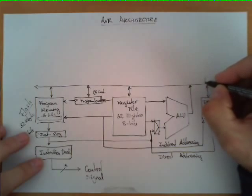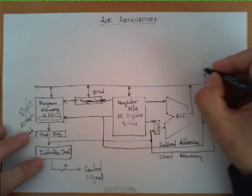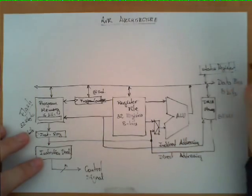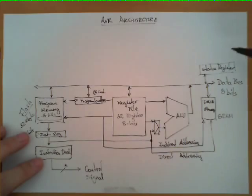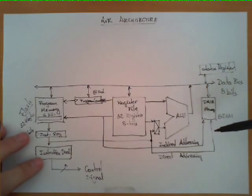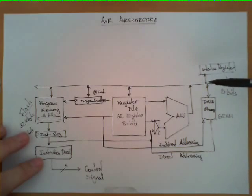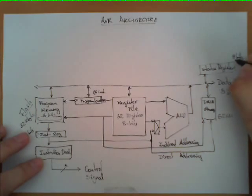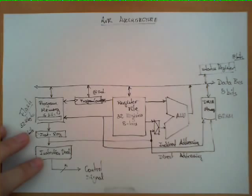One more important block connected to the data bus is the status register. The status register is in charge of remembering certain events that occur while instructions are executing in this data path — namely, if the last operation result was zero, if it was negative, if there has been some overflow, etc. All those conditions are stored here. This is an 8-bit register and they are all stored as a 0 or a 1 condition.